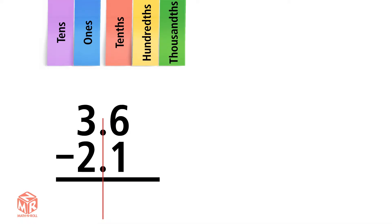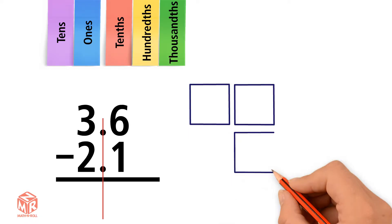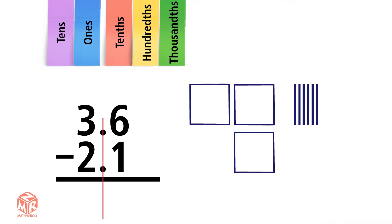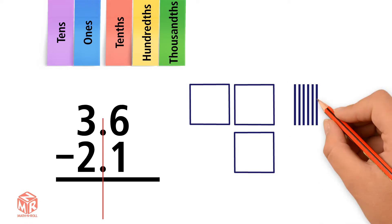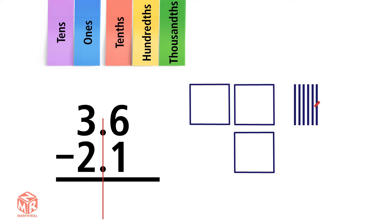Let's draw 3.6. The squares represent the ones, and the bars represent the tenths. 3.6 has 3 ones and 6 tenths. We always subtract from right to left, so we start with the tenths. 6 minus 1 equals 5, so we write a 5 in the tenths column.